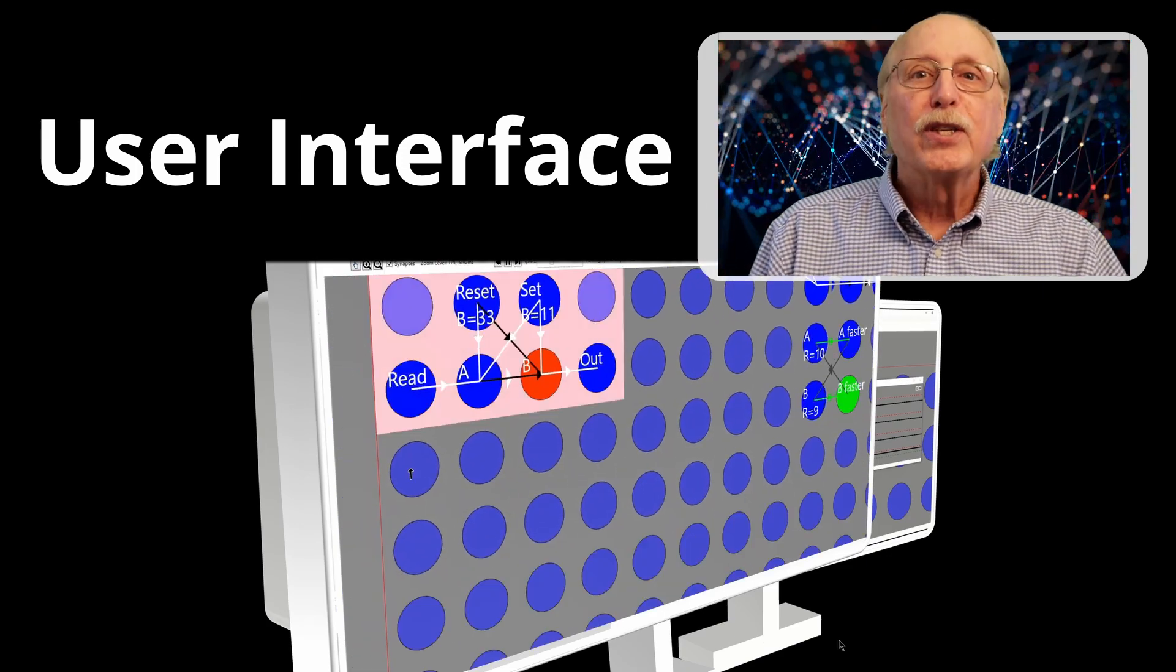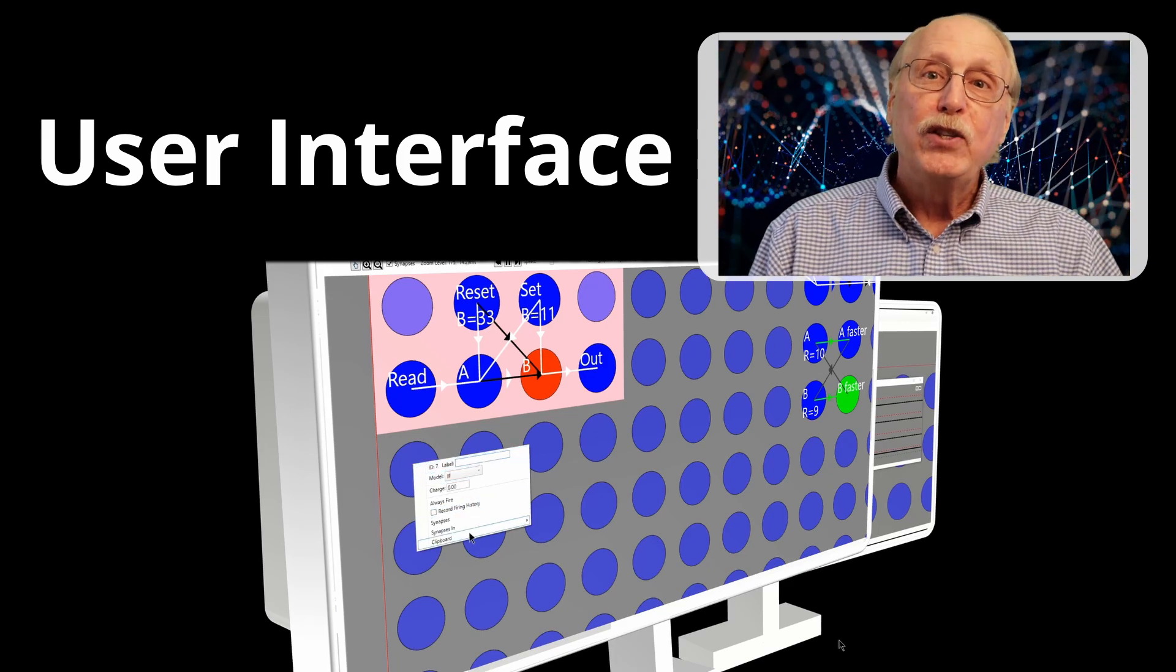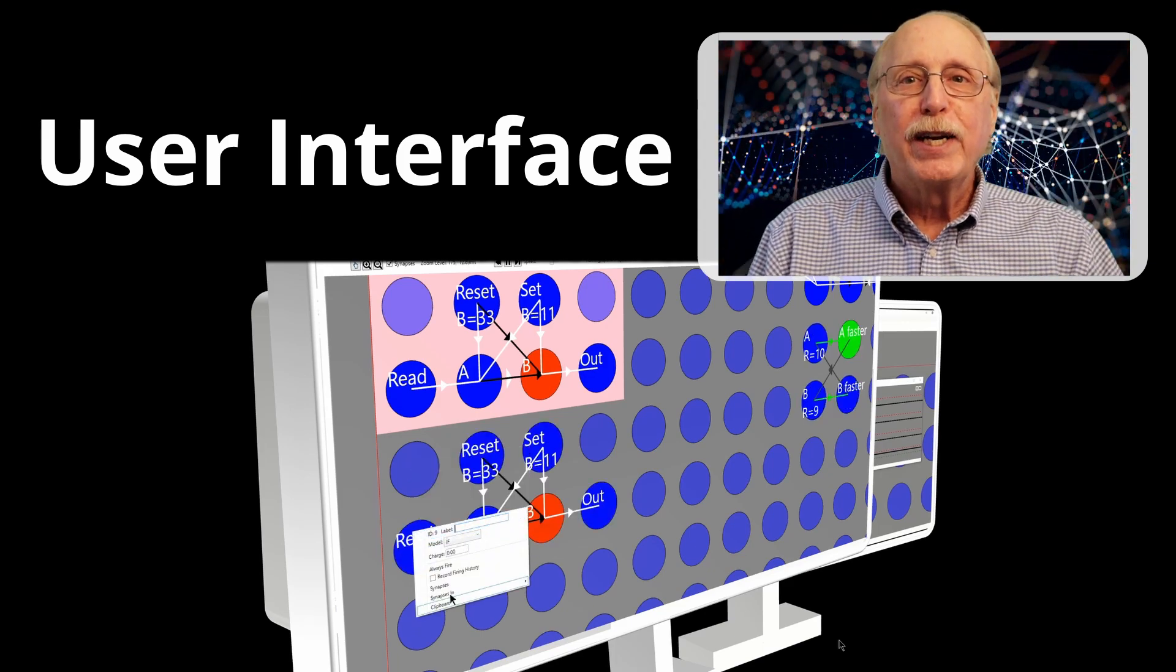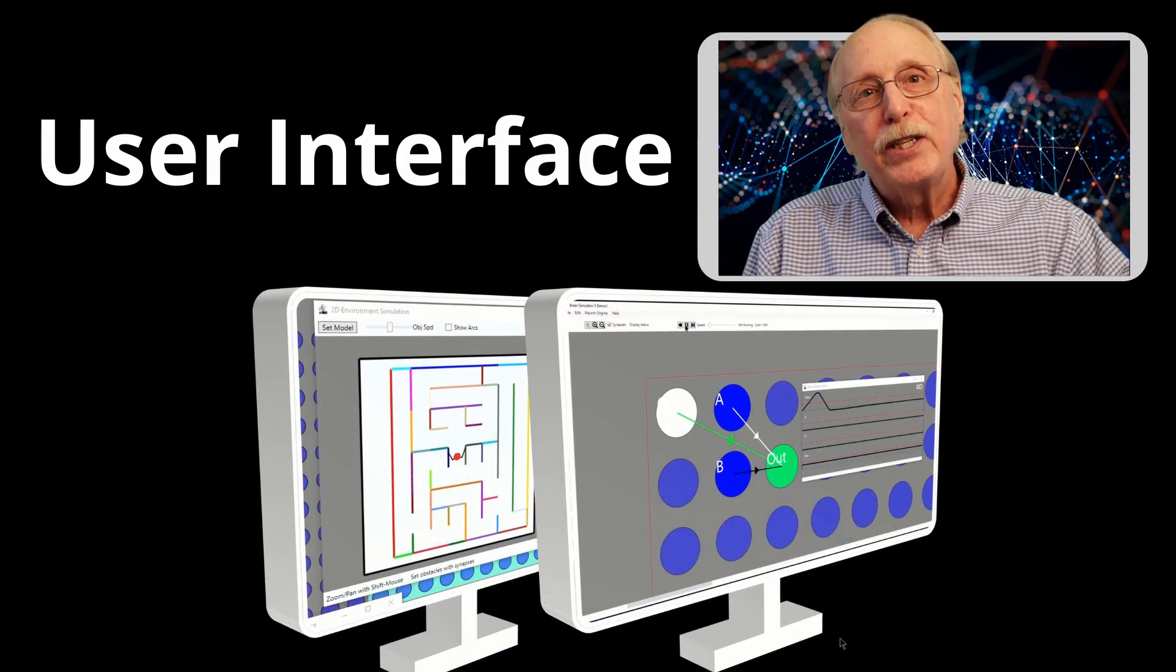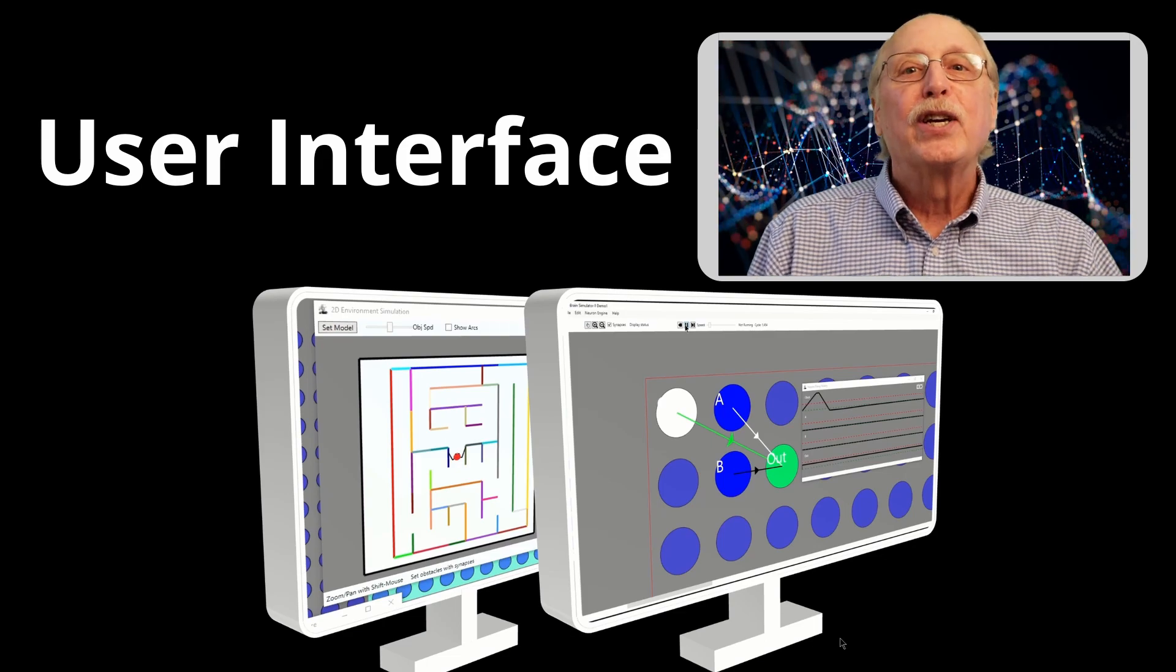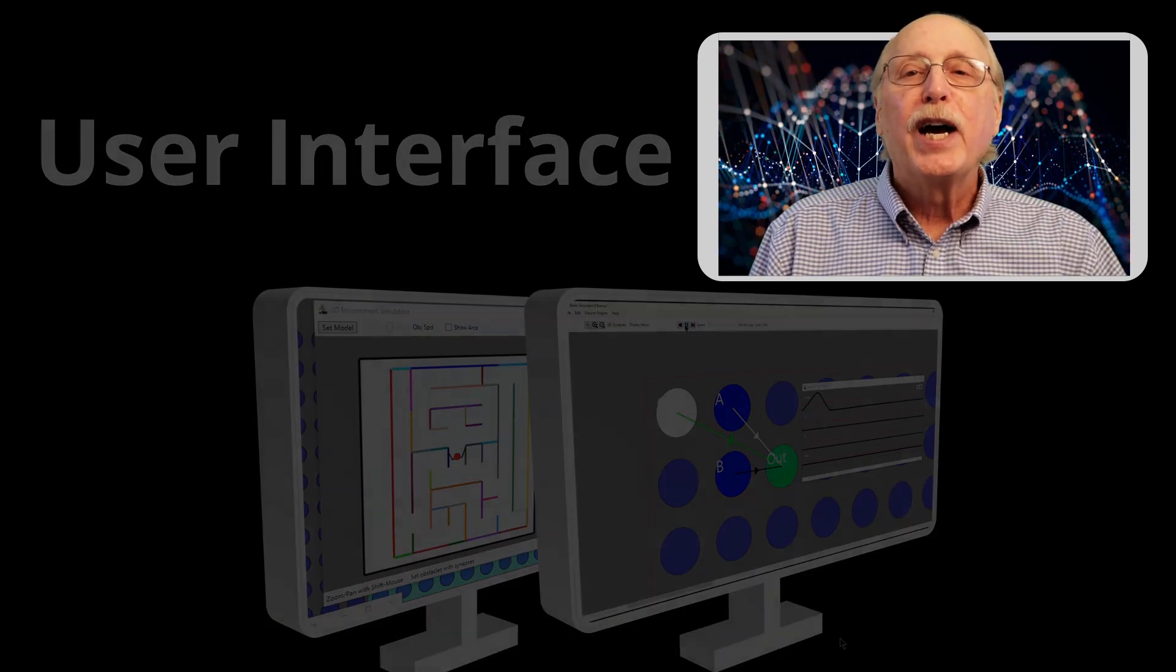Once you've built simple neural circuits, the user interface lets you copy them and paste them to create powerful functionality. The user interface is also your key to understanding how neurons can work together to implement AGI.